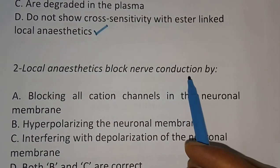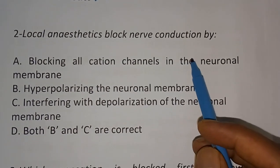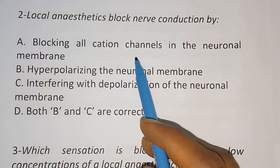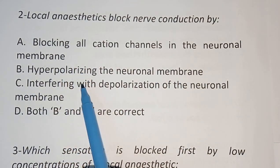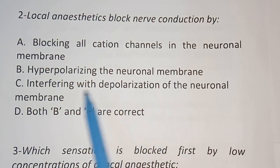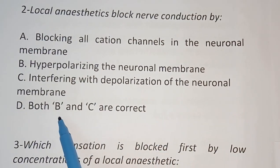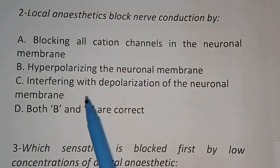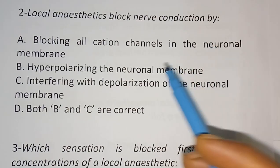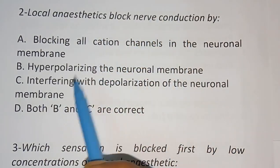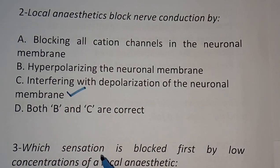Question 2: Local anesthetics block nerve conduction by: (A) blocking all cation channels in the neuronal membrane, (B) hyperpolarizing the neuronal membrane, (C) interfering with depolarization of the neuronal membrane, (D) both B and C are correct. The correct answer is option C — interfering with depolarization of the neuronal membrane.